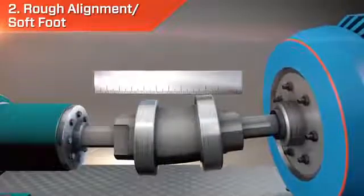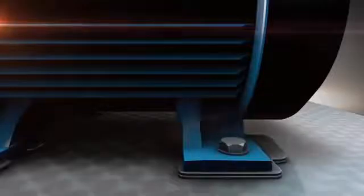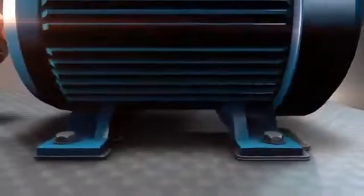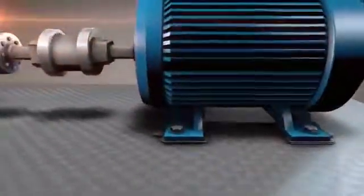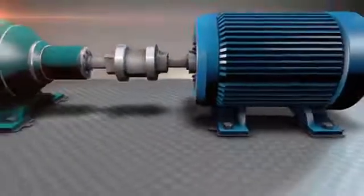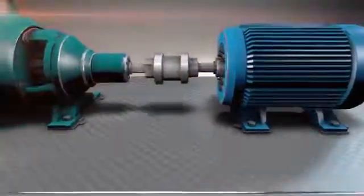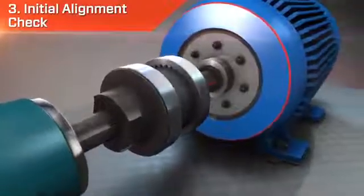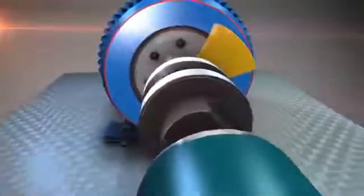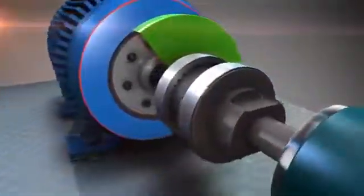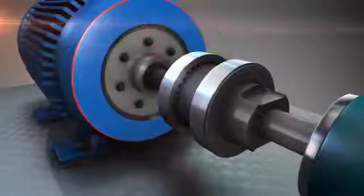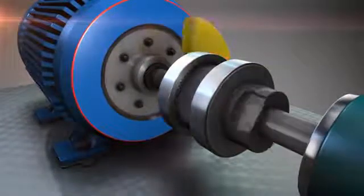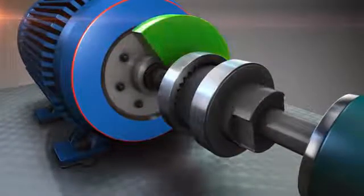Secondly, we perform a rough alignment and rough soft foot correction simultaneously. The goal is to eliminate coupling strain and ensure that the machine is alignable. Now, it is time for step three. The first alignment check with the laser system to ensure measurement repeatability and that the misalignment is less than 15 thousandths at the coupling.